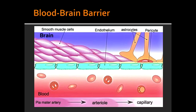What are some other types of barriers in the body? Other barriers include the blood-testes barrier and the maternal-fetal blood barrier of the placenta. Vasogenic edema can occur when an infarction or neoplasm destroys endothelial cell tight junctions.